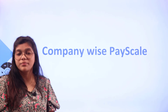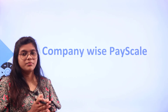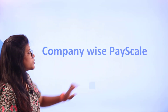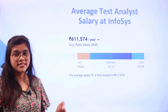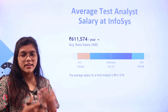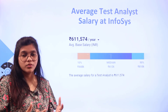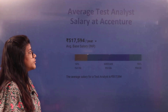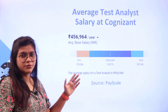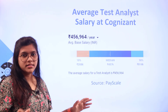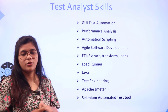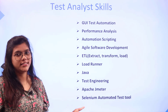Now, which company should you pick? You should be well aware of how they are paying you as a test analyst. The first company is Infosys at 6,11,000 per annum — you can imagine how much more as demand eventually grows. Then Accenture at 5,17,000, and Cognizant at 4,55,000 — a balanced amount of pay across these companies. If you want to land in such companies with that level of pay, you need to have all of the skills mentioned here.